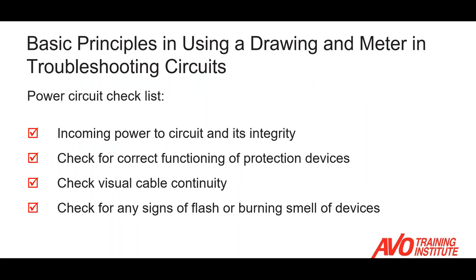Checking the power circuit, we can use a checklist. We need to check the incoming power supply and its integrity, check the functioning of our protection devices, do a visual check on cable continuity, and look for any signs of flash or burning. We need to use our senses — sight, smell, touch — to see if we can detect anything.